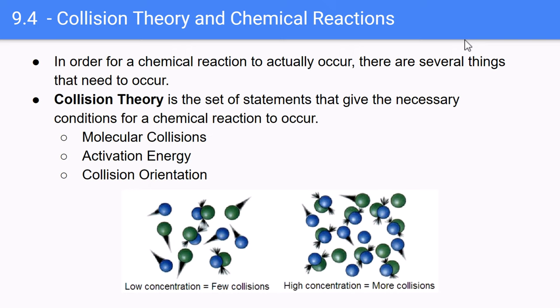In order for a chemical reaction to actually happen, several things have to occur. The big picture idea is collision theory — a set of statements giving the necessary conditions for a chemical reaction to occur. We need three things: first, molecular collisions. In order to convert reactant to product, molecules have to collide. Without those collisions, we simply cannot convert reactant to product. Second, activation energy — the molecules have to have enough energy in the collision to break bonds and convert between reactant and product. And third, the collisions have to have proper orientation — they have to collide a certain way in order to go from reactant to product.